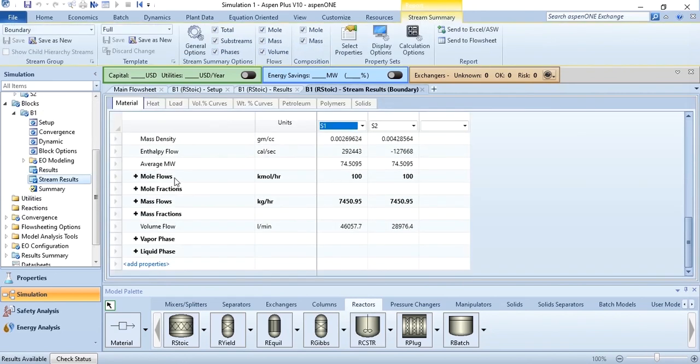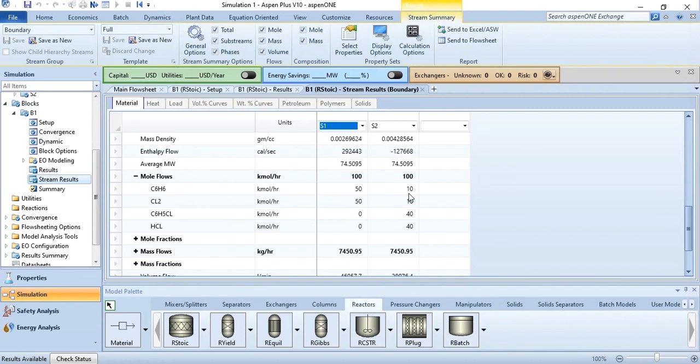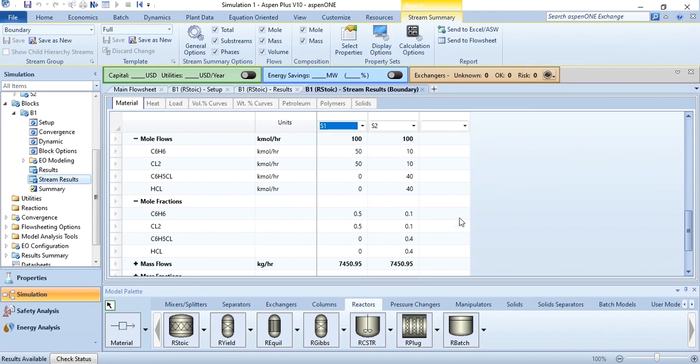So the outlet flow rate of benzene is 10, for chlorine is 10, for chlorobenzene it's 40, and for HCl it's 40. The composition you can see: 0.1, 0.1, 0.4, 0.4.